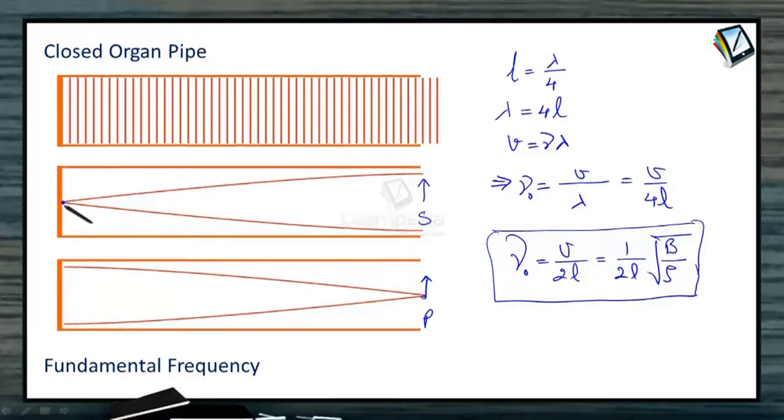And in place of displacement node, there should be an anti-node of the pressure. So, this is the fundamental mode of vibration in case of closed organ pipe.